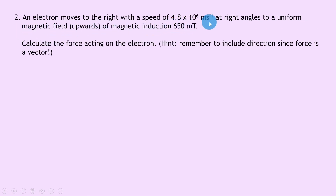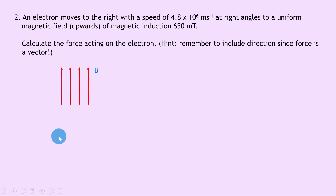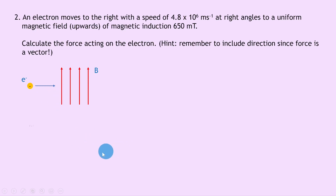Question two: an electron moves to the right with a speed of 4.8 times 10 to the 6 meters per second at right angles to a uniform magnetic field upwards of magnetic induction 650 millitesla. Calculate the force acting on the electron — remember to include direction since force is a vector. Sketching the setup: magnetic field direction b upward, electron on the left moving to the right at right angles to the field.